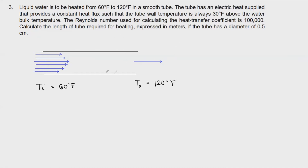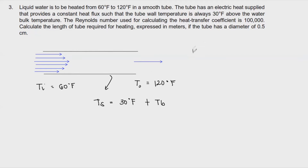The tube has an electric heater providing constant heat flux, so the wall temperature is always 30 degrees above the water bulk temperature. The Reynolds number is given as 100,000, and we need to find the length of the tube, given that the diameter is 0.5 cm.